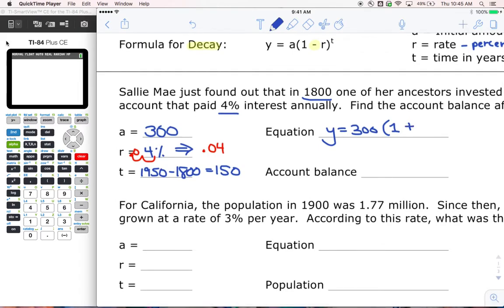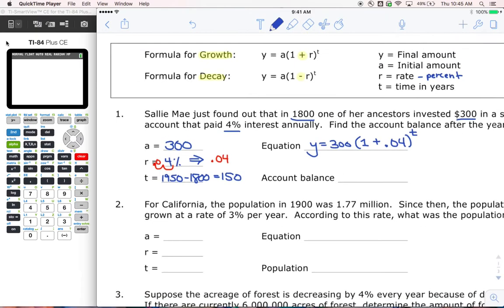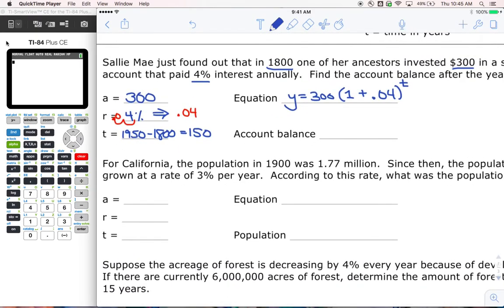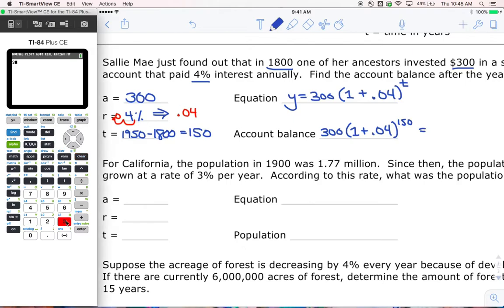And every single time we do one of these problems, you have to make that decision - is it going to be a plus or a minus, is it growth or decay? You determine that by the context of the problem. Now we've got R, so we've got 0.04 to the power of T. So the account balance after 150 years, we're going to say 300, we've got 1 plus 0.04 to the power of 150. How much does that give us? Well, I don't know that math off the top of my head, so we're going to use our calculator here.